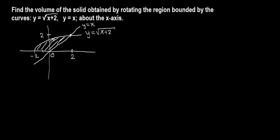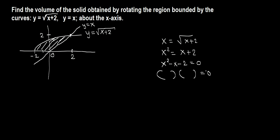You can also find the intersection point using algebra. We set y equals x equal to y equals root x plus 2, so x equals root x plus 2. Square both sides: x squared equals x plus 2. Subtract: x squared minus x minus 2 equals 0. Factor: x equals 2 or x equals negative 1. Since negative 1 is not valid here, x equals 2.